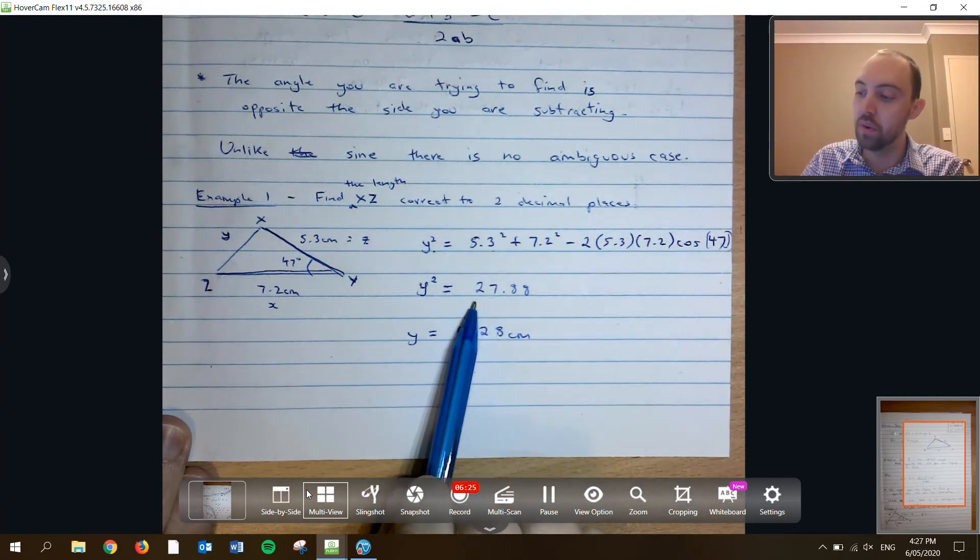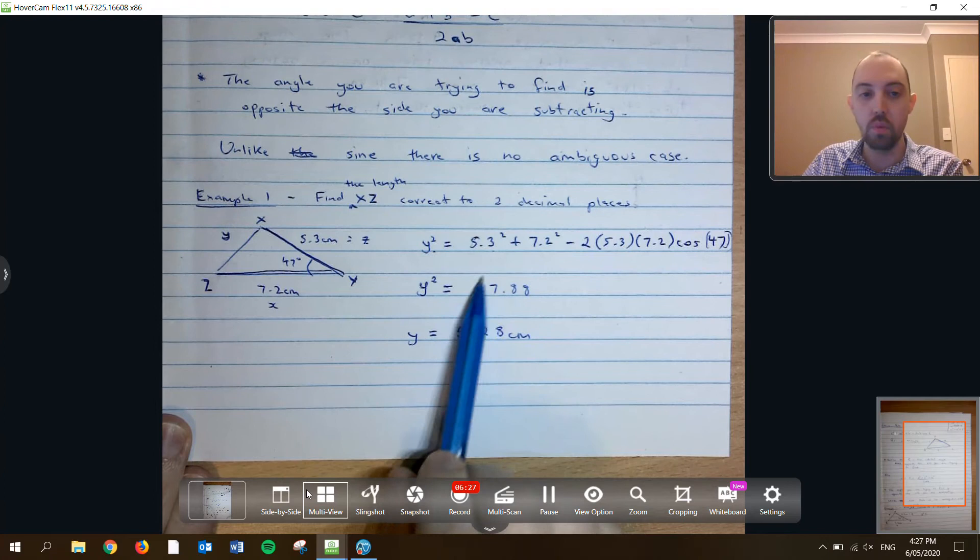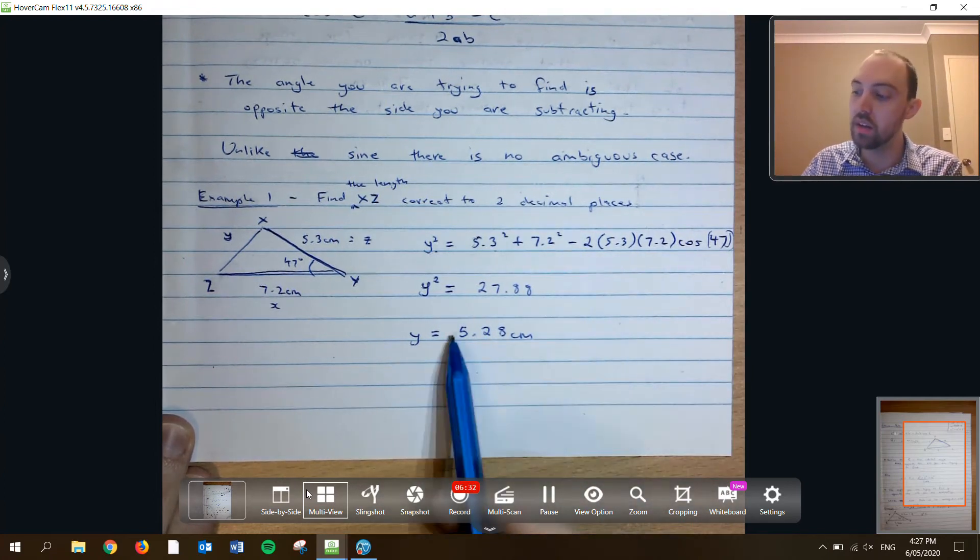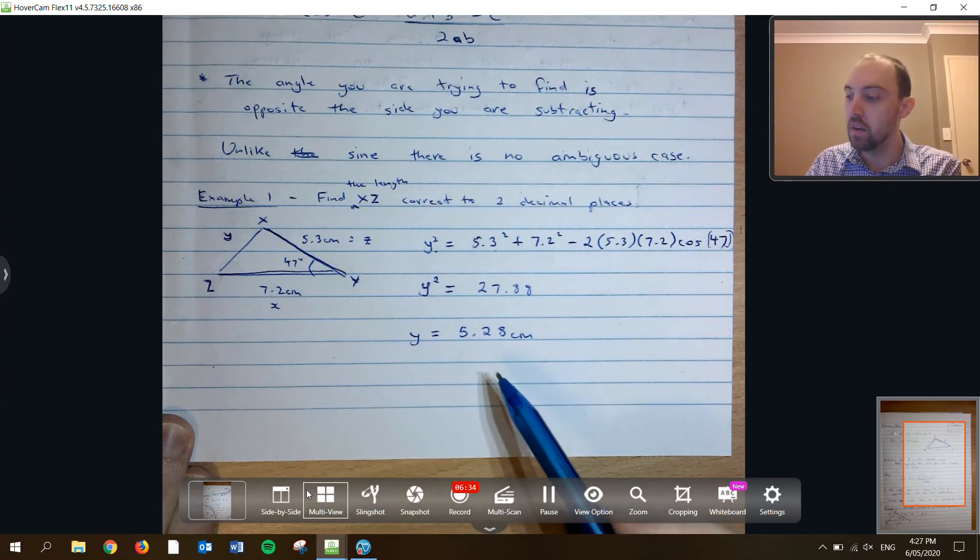Make sure you don't do the square root of 27.88 because that I have rounded. You want to use the answer from your calculator to make sure you don't have any rounding errors.